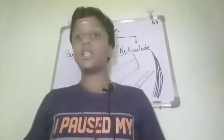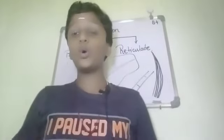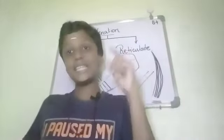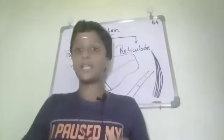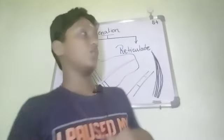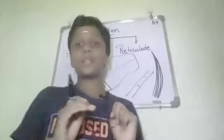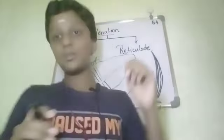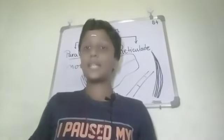That is about parallel venation. In which type of plants can you find parallel venation? Parallel venation is found in monocot plants. Almost all monocot plants have parallel venation. In a monocot plant, the seed has just one cotyledon. Parallel venation itself has two types: in type one, the veins move towards the margin of the leaf; in type two, the veins move towards the tip of the leaf.